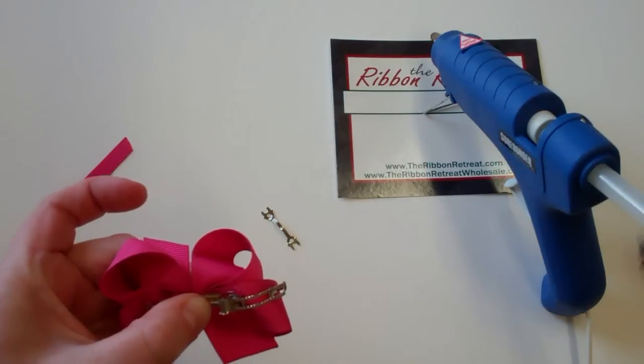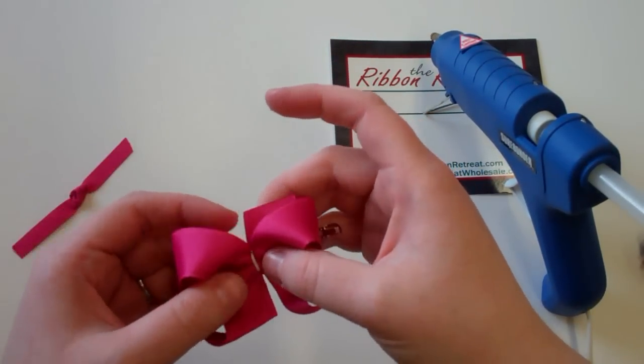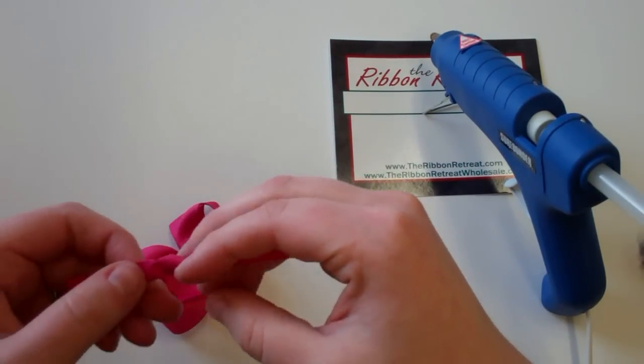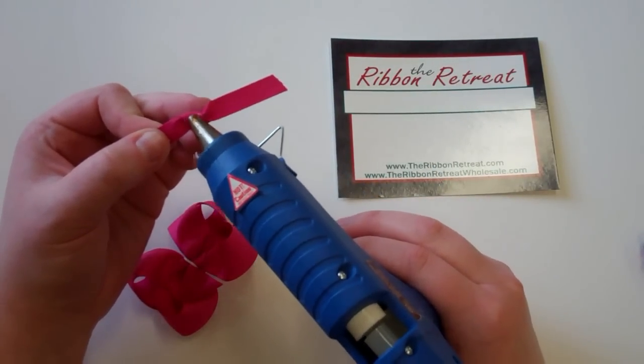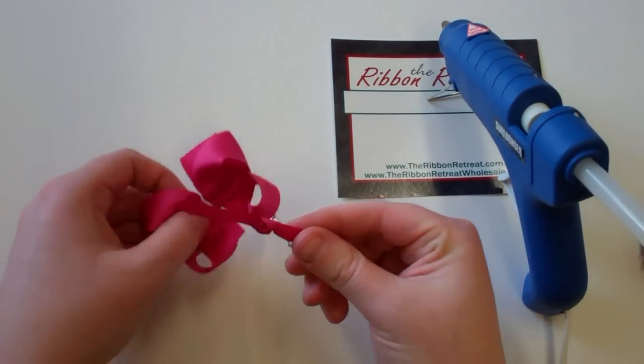Again, pressing tight to get the best seal. Okay, on the back of my knot, I'm going to put just a little bit of glue, just to hold it in place, on the front of the bow.